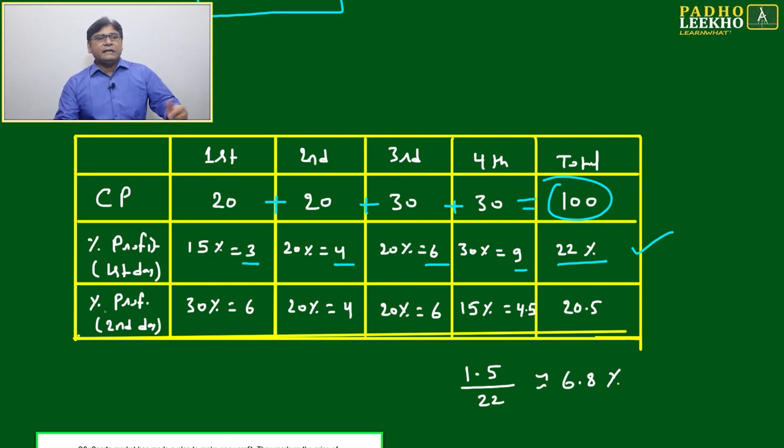Next day, the son made an interchange. 30% will come here: 6, 4, 6, and 15% of 30 is 4.5, giving 20.5. First day, the father made 22% profit overall. The son made 20.5% profit overall.